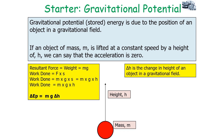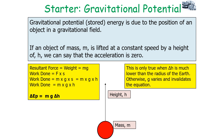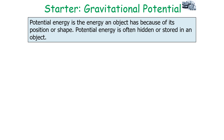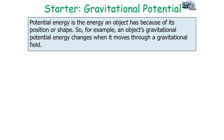This equation is only valid when the change in height is much lower than the radius of the Earth; otherwise, the gravitational field strength G would vary and invalidate the equation, since we are treating it as a constant. GPE is gained when an object moves higher and lost when an object moves lower. Potential energy is the energy an object has because of its position or shape — it is often hidden or stored in an object. For example, an object's gravitational potential energy changes when it moves through a gravitational field.